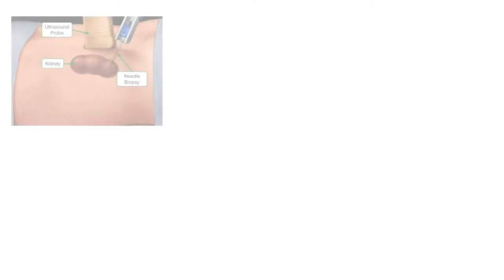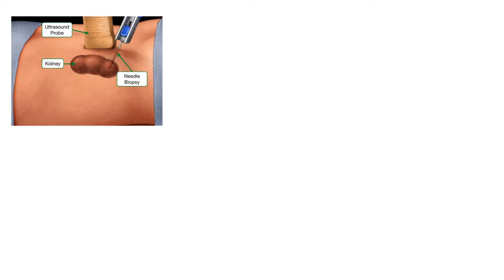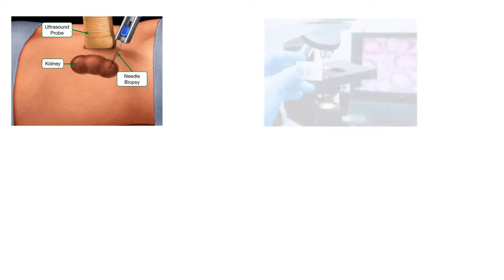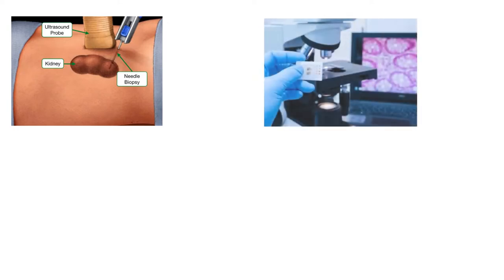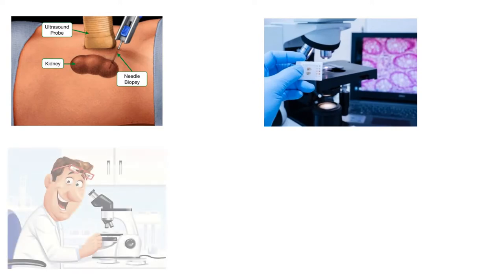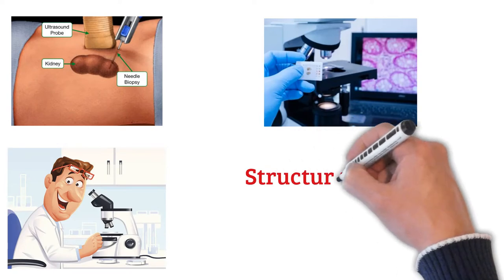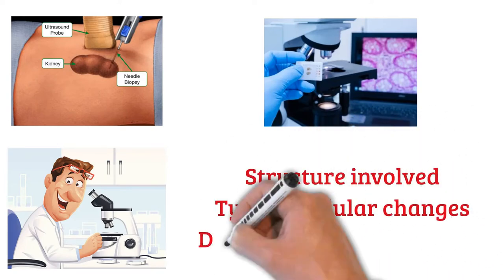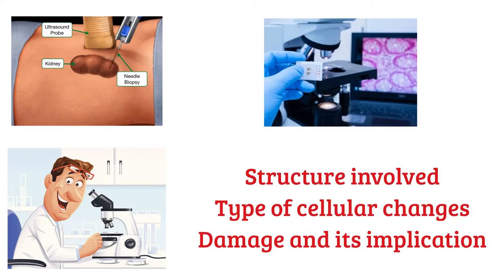To define the exact type of rejection, a renal biopsy must be performed to collect a sample of tissue. This sample is then prepared on a slide and examined under the microscope. When examining for rejection, the pathologist examines the structure involved, the type of cellular changes and damage occurring, and the implication of the damage. Based on these characteristics, the appropriate treatment modality can be selected.